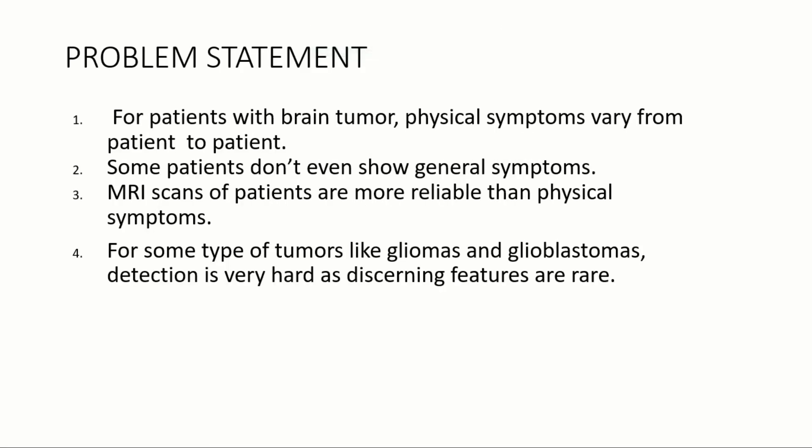In Problems Treatment, for patients with brain tumor, physical symptoms vary from patient to patient. Some patients don't even show any general symptoms. Some patients show general symptoms like blood clot, vision loss, and even nervous disorders. MRA scans of patients are more reliable than physical symptoms. In such types of tumors like Gliomas and Glioblastomas, detection is very hard to find the tumor present in the brain.